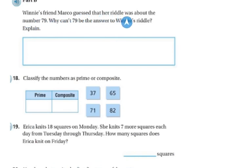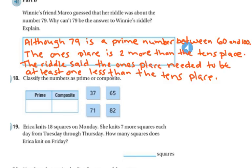Winnie's friend Marco guessed that her riddle was about the number 79. Why can't 79 be the answer to Winnie's riddle? Explain. So although 79 is a prime number between 60 and 100, the 1s place is 2 more than the 10s place, because 9 is 2 more than 7. And the riddle says that the 1s place needed to be at least 2 less than the 10s place.